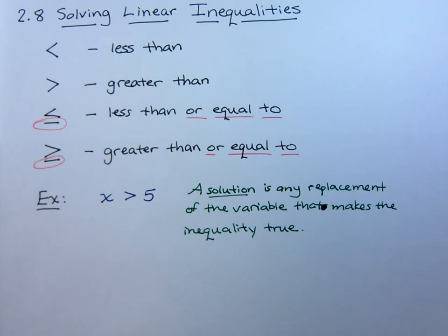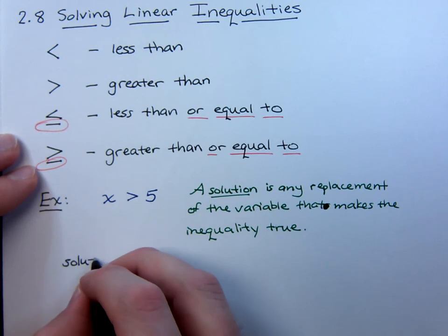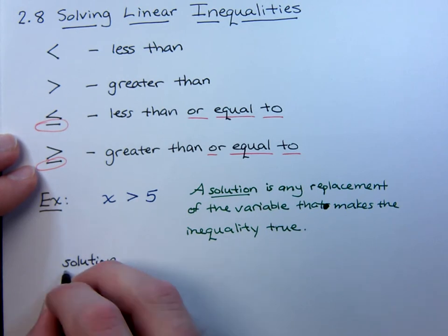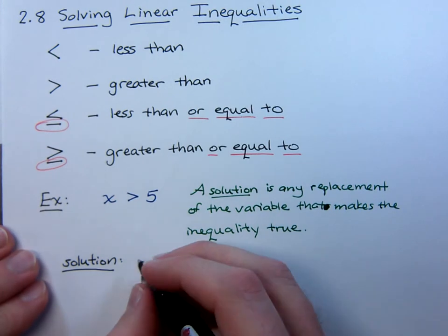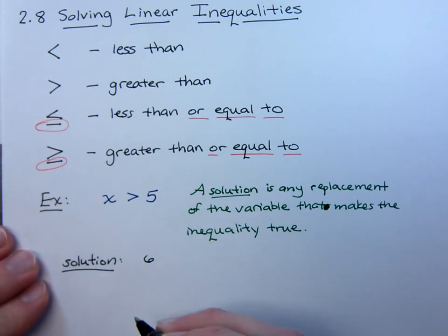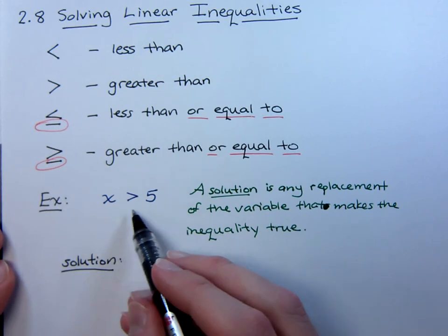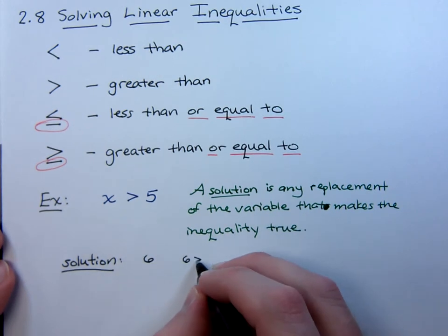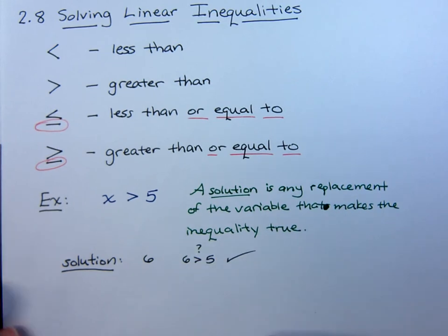So if I'm looking at the inequality x is greater than 5, I'm sure you can tell me an example of a solution for this inequality. And I bet the first thing you'd come up with is 6. Well, yes, naturally 6 is going to be a solution. You see that 6, if you plug it in here, 6 is greater than 5. Is that true? Yes, it's true. So that's going to be a solution.